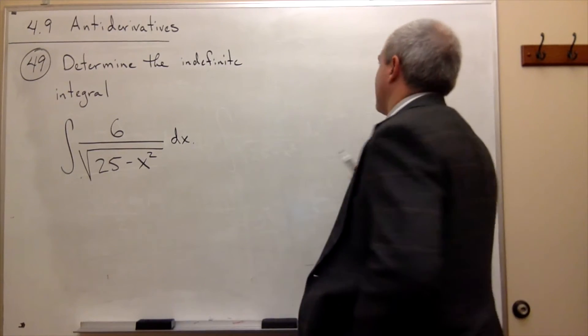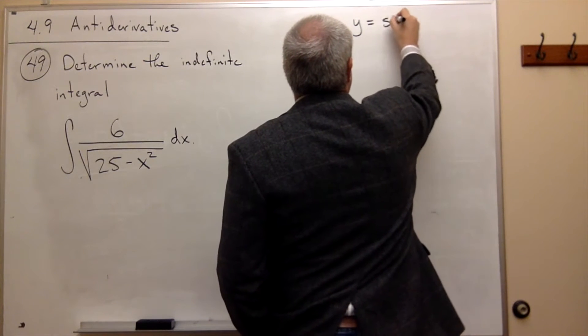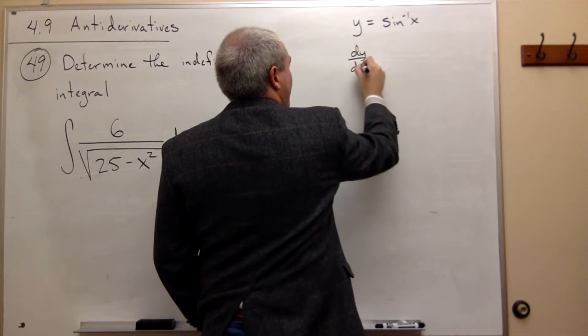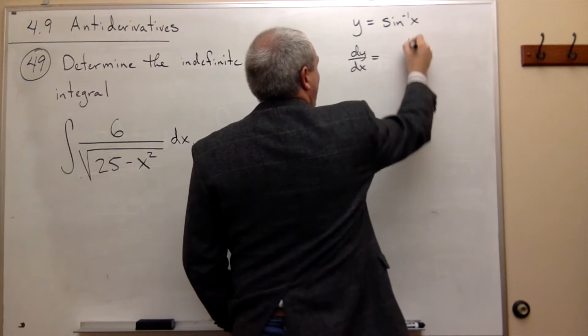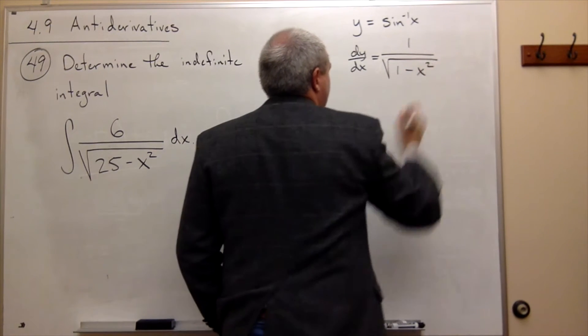And let me show you what I mean. So if y was equal to sine inverse of x, then we know that the derivative of y, or dy/dx, is equal to 1 over the square root of 1 minus x squared.